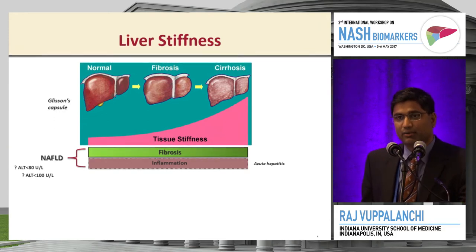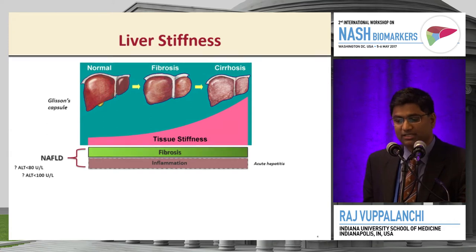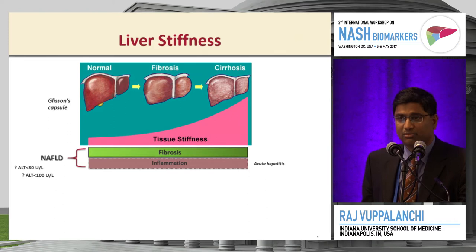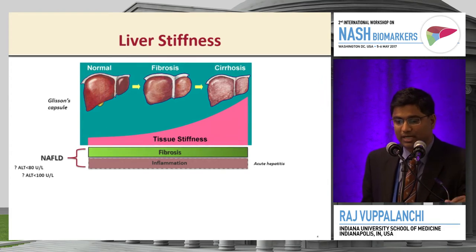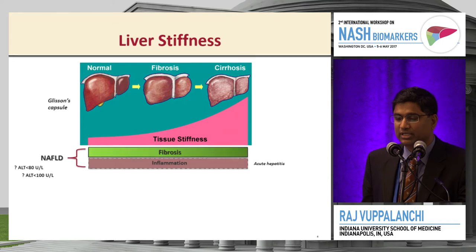Currently, we call liver stiffness measurements unreliable if ALT is more than 100. So when is it reliable — when ALT is less than 100 or less than 80? There is expert opinion on this. I use 100, but somebody else may use 80 units per liter as the unreliable threshold.